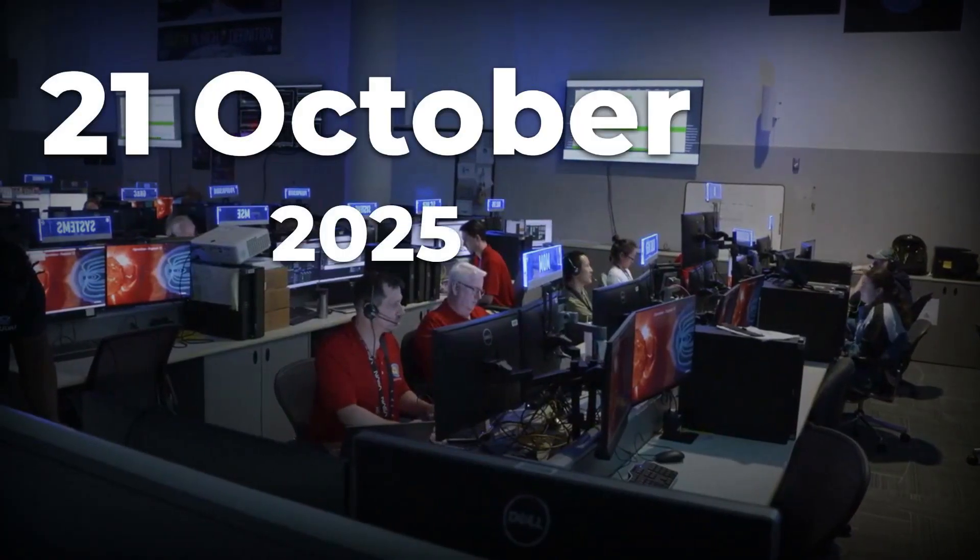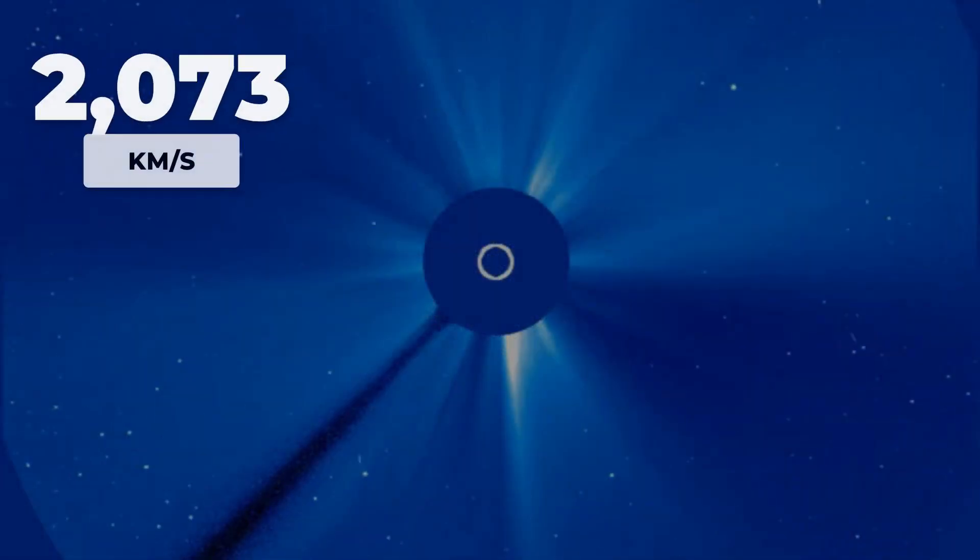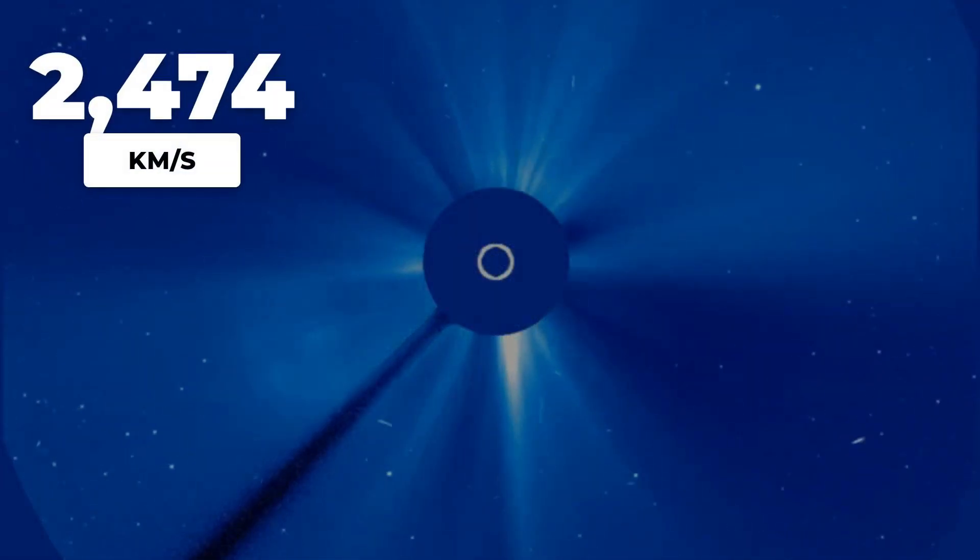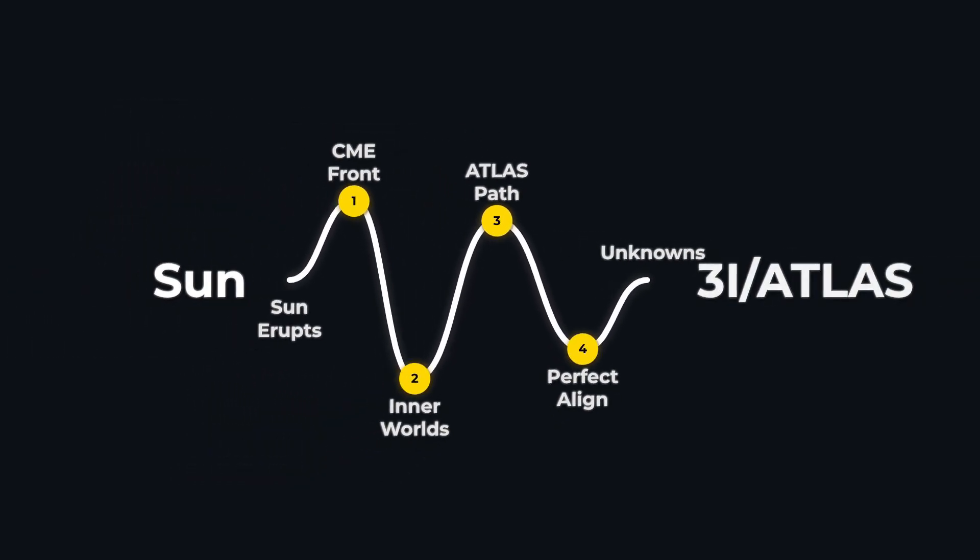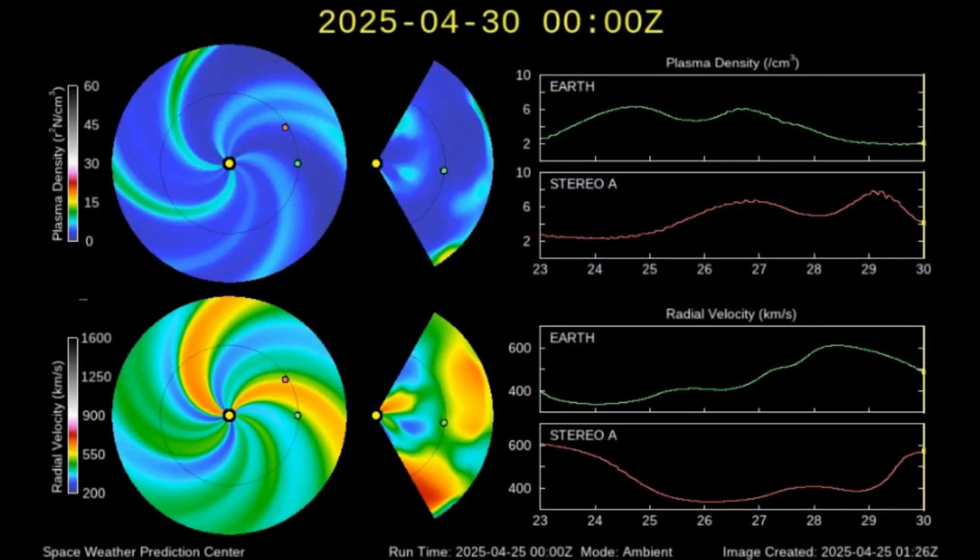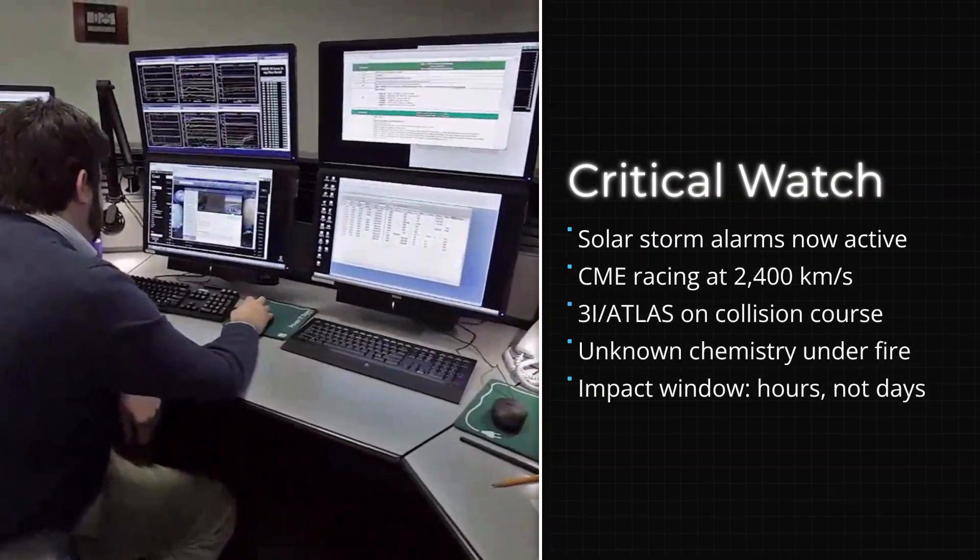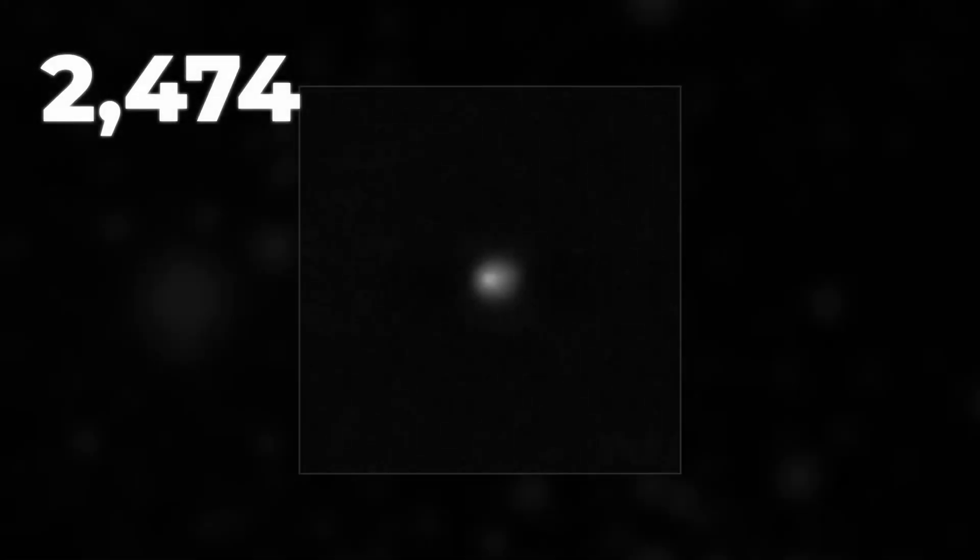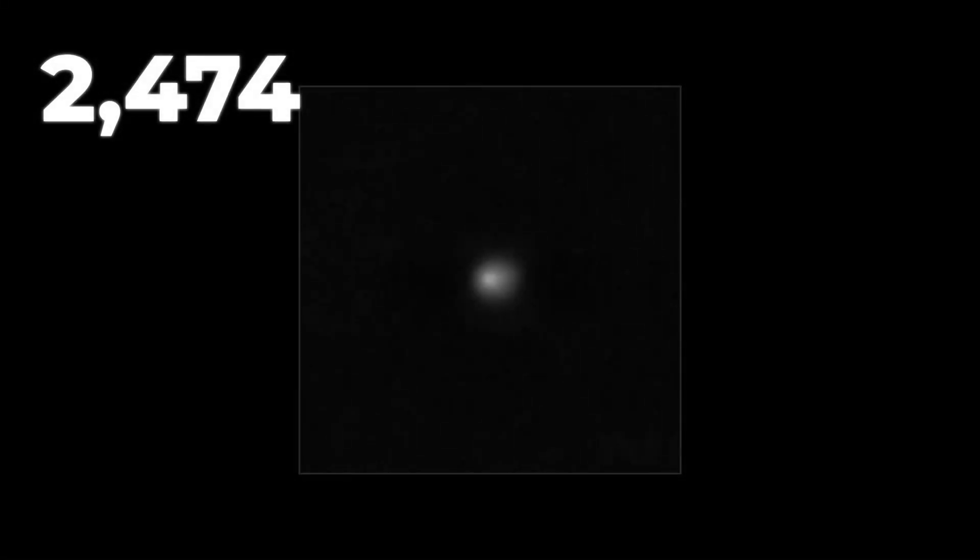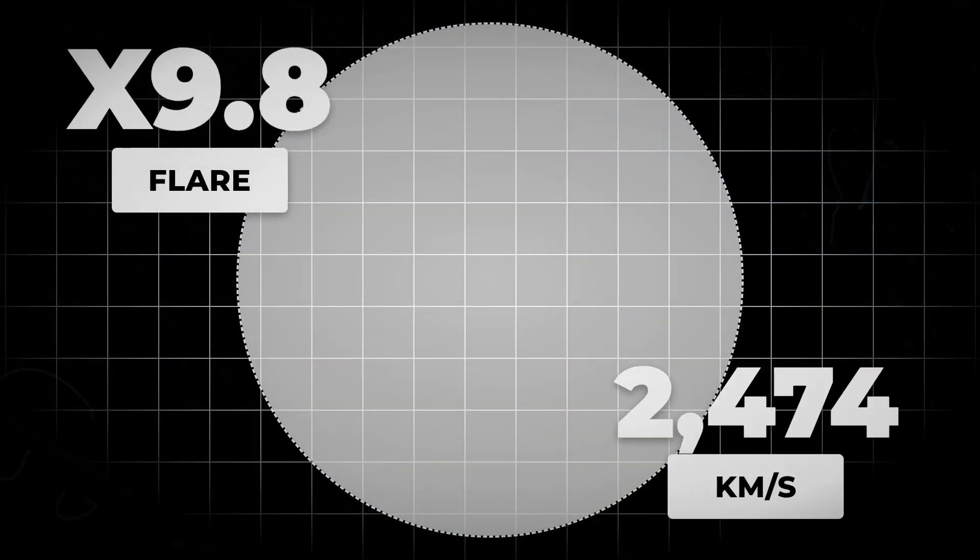October 21, 2025. A solar storm explodes on the far side of the Sun, its shockwave traveling at nearly 2,500 kilometers per second. At the same moment, Interstellar Object 3I/Atlas is hidden in direct alignment behind our Sun, caught between Earth and a cosmic blast no telescope can yet see. The official forecast warns of radiation storms and rising geomagnetic danger, but as 3I/Atlas races toward its closest approach, no one can yet explain what happens when an alien visitor is supercharged by our star.